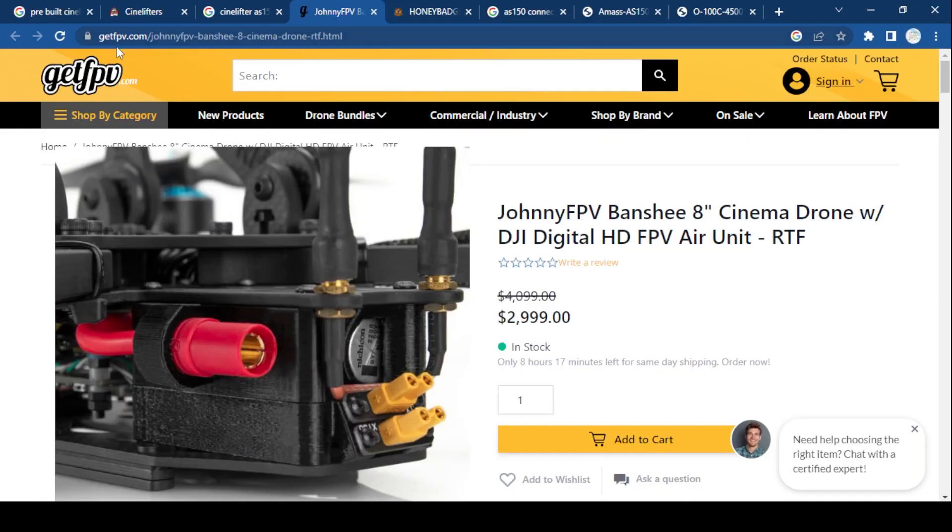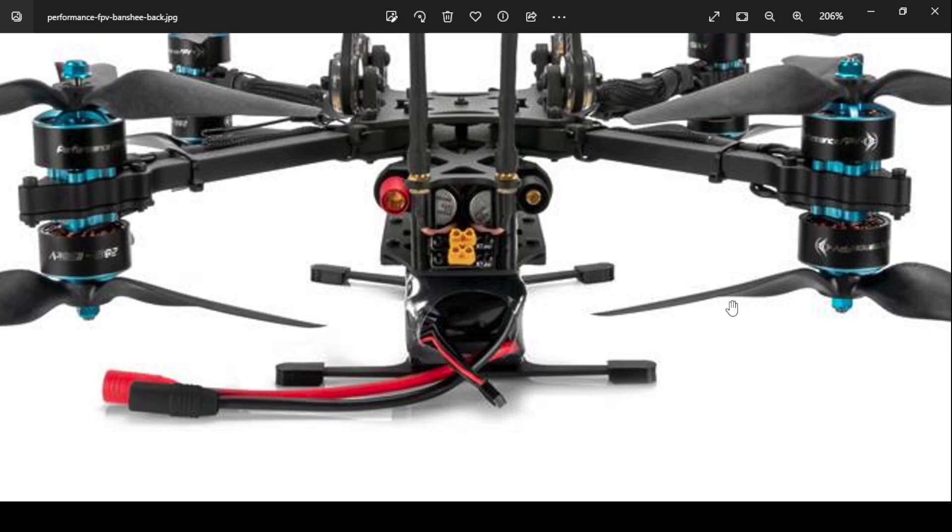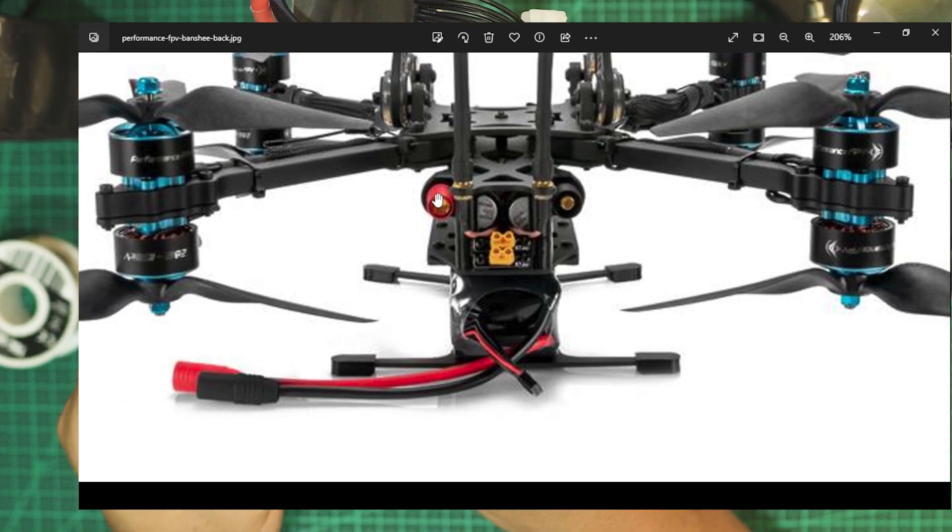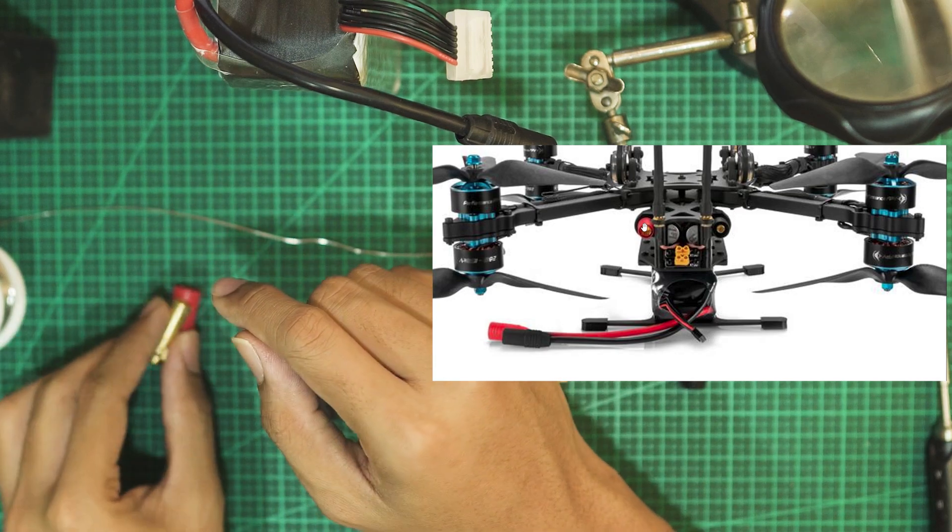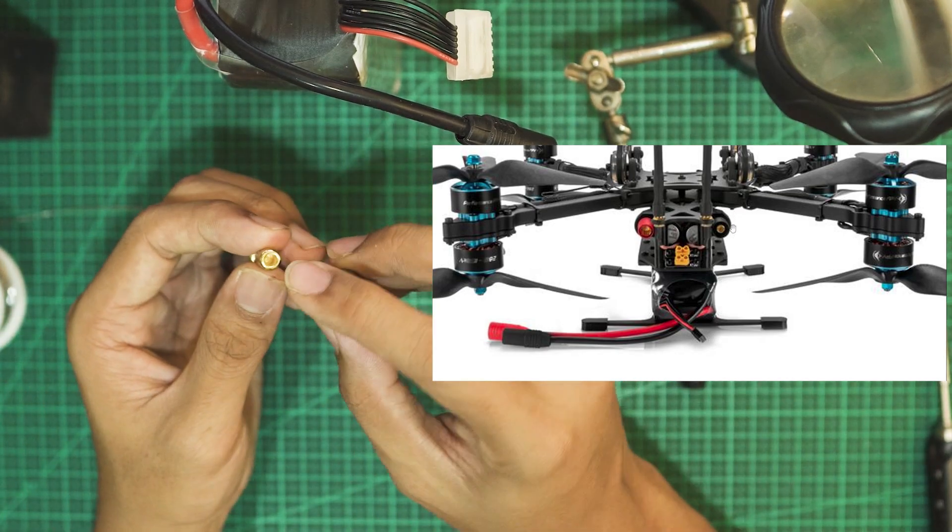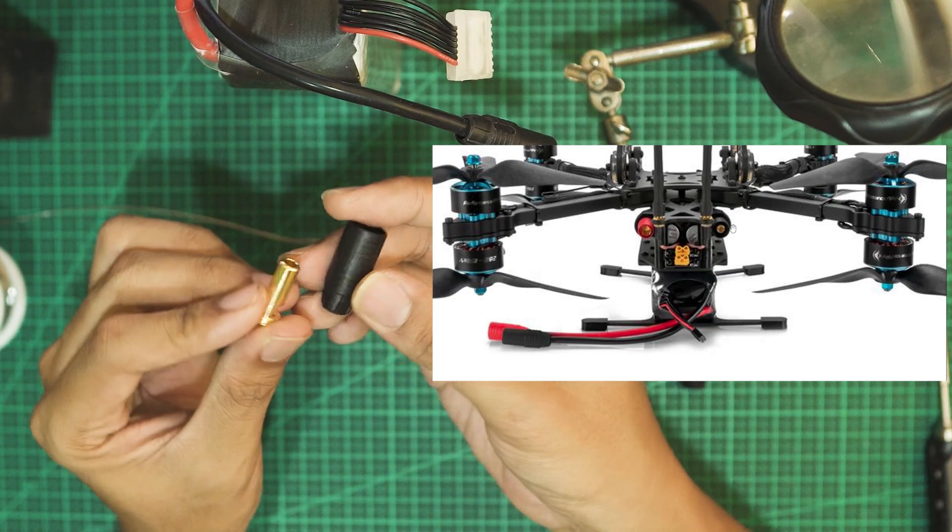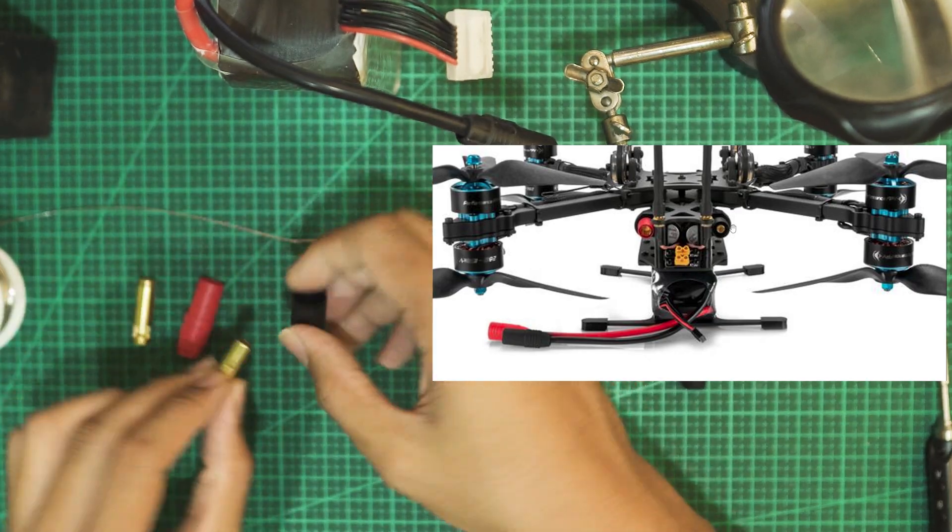Here's a GetFPV listing for the Johnny FPV Banshee 8-inch. As you can see over here, these are the leads for the ESC. The positive lead is the larger plastic with the female lead over here. Negative lead, there's a hole over here on the negative lead, which is the male negative lead.